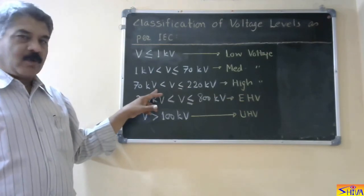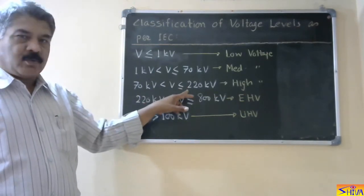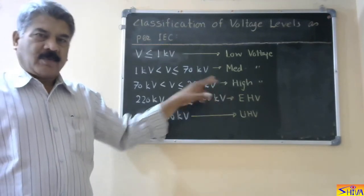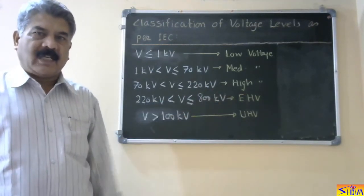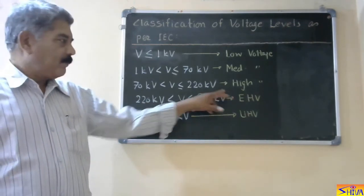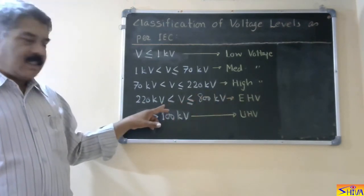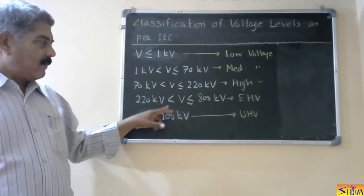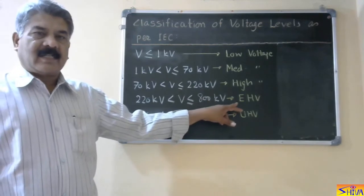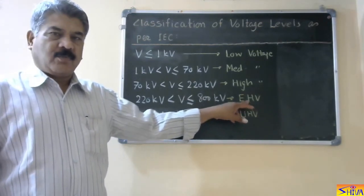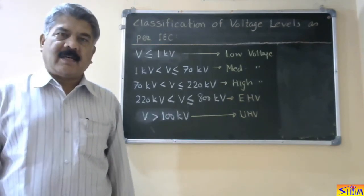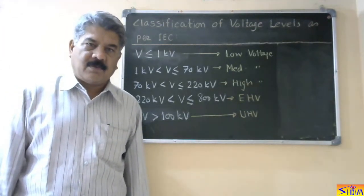If voltage is more than 70 kV but less than or equal to 220 kV, it is high voltage. So 132 kV and 220 kV lines come under the high voltage category. If voltage is more than 220 kV but less than or equal to 800 kV, it is extra high voltage. The 400 kV and 700 kV lines come under extra high voltage.